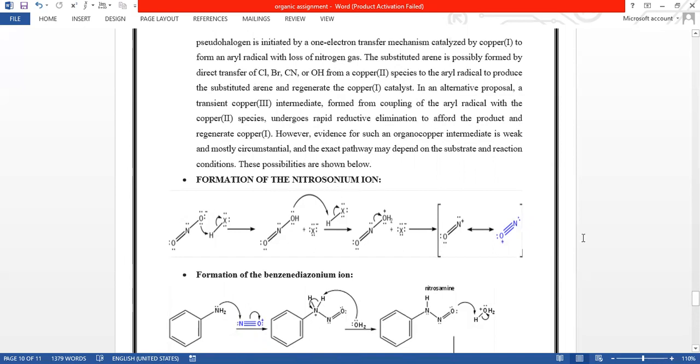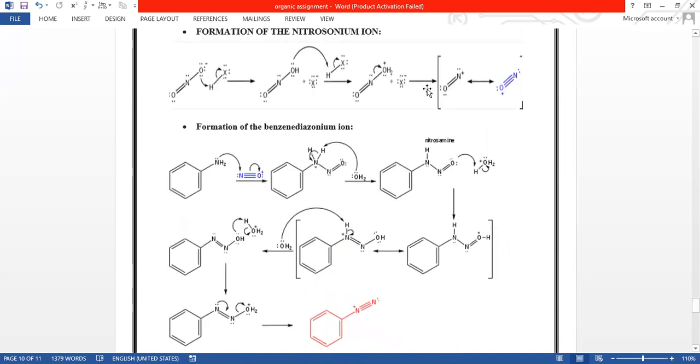First, there is the formation of the nitrosonium ions. As you can see that there is the formation of the nitrosonium ions. The lone pair on the oxygen attack the hydrogen and the bond is shifted toward the halogen. And then this is basically attached and there is homolytic cleavage and thus hydrogen and halogen is separated from each other. Then the lone pair present on the oxygen attack the hydrogen again. And then we again get the hydrogen in excessive amount. And then there is the formation of the nitrosonium ion. This is the basically stable configuration of the nitrosonium ion.